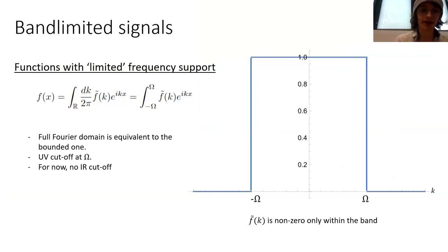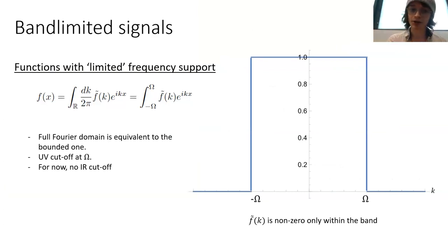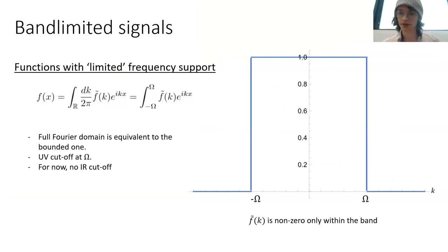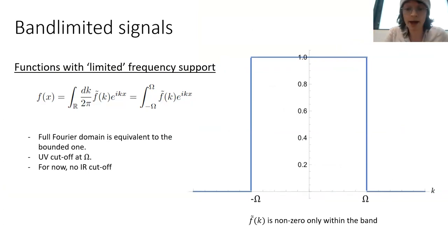I want to talk a little bit about band-limited signals. These are functions with limited frequency support, so their Fourier transform, even though it's over all of the reals, can be equivalently expressed over some finite bandwidth. In this case, I use minus omega to omega, where omega is what we call an ultraviolet cut-off. For now we have no infrared cut-off, just an ultraviolet cut-off at omega, so the Fourier domain is bounded.